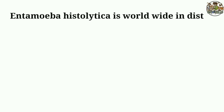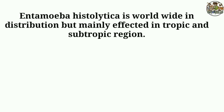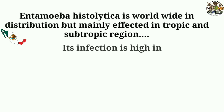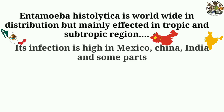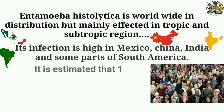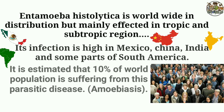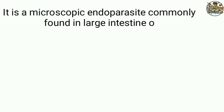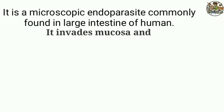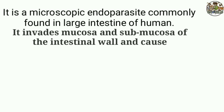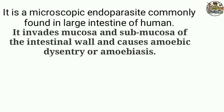Entamoeba histolytica is worldwide in distribution but mainly affects tropical and subtropical regions. Its infection is high in Mexico, China, India, and some parts of South America. It is estimated that 10% of the world population is suffering from amoebiasis by this parasitic organism. It is a microscopic endoparasite commonly found in the large intestine of humans. It invades the mucosa and submucosa of the intestinal wall and causes amoebic dysentery or amoebiasis.